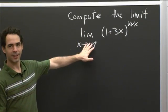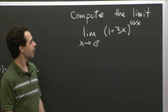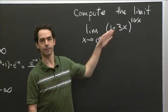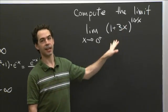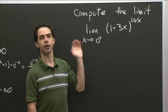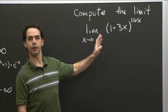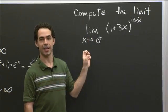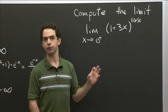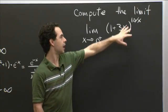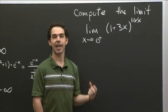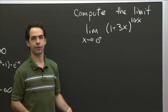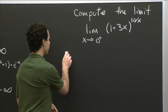Welcome back. Hopefully you had some luck working on this problem. As we said, this is a limit of an indeterminate form of the 1 to infinity type. As one of the three exponential types of indeterminate forms, a really promising first step almost every time is to rewrite this as an exponential expression with base e. First we just do an algebraic manipulation on the thing we're taking the limit of, and then often that simplifies it into something where we can actually compute the limit.